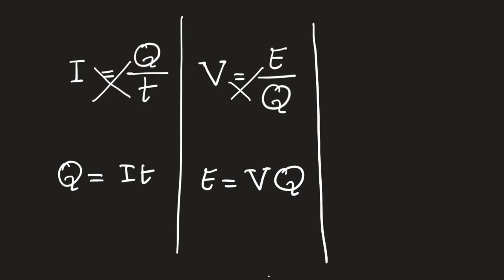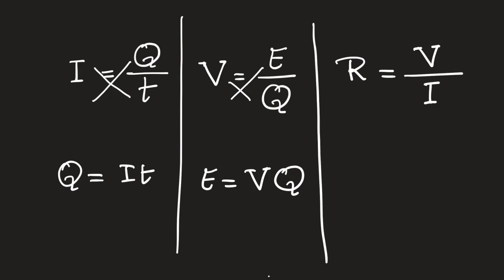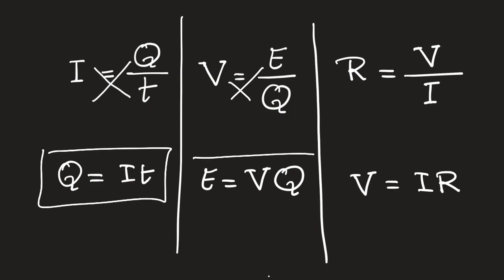The third most fundamental equation is Ohm's law. It says that resistance equals the electric potential difference, or voltage, divided by the magnitude of the electric current — hence I. So one ohm equals one volt per ampere. Cross multiplication gives the famous Ohm's law: V equals I times R. So to summarize: Q equals IT, E equals VQ, and V equals IR.